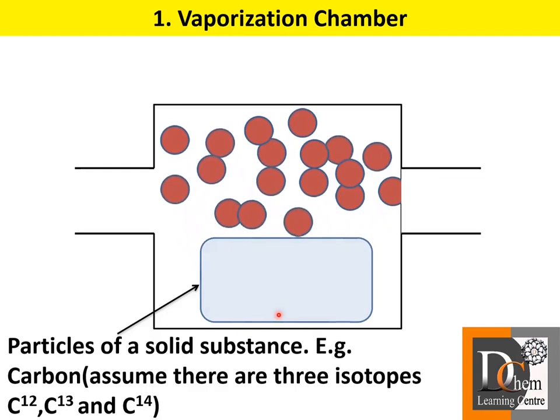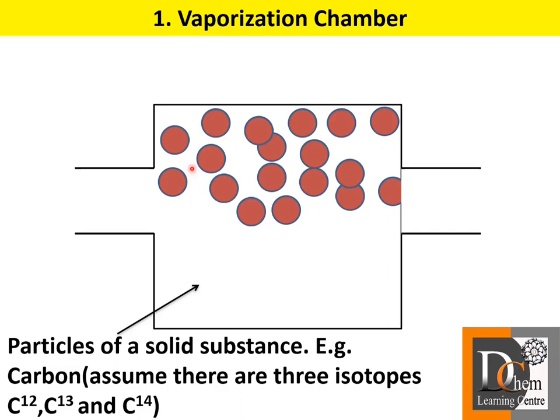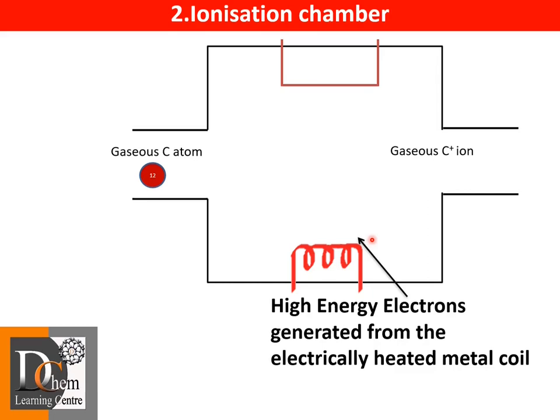The substance is vaporized or sublimed on heating inside the vaporization chamber, producing gaseous atoms or gaseous molecules. Inside the ionization chamber, an electrically heated metal coil gives rise to high energy electrons, which are attracted to a positive charge electron trap.